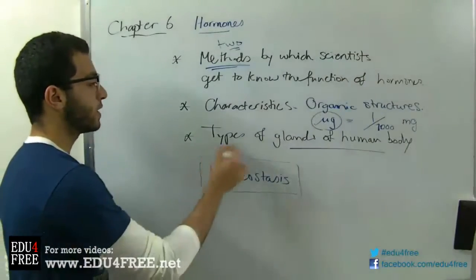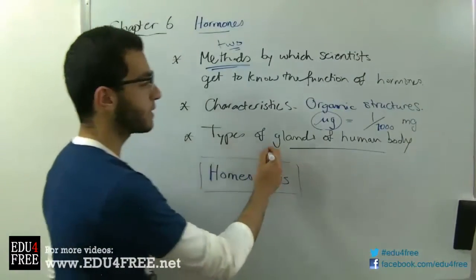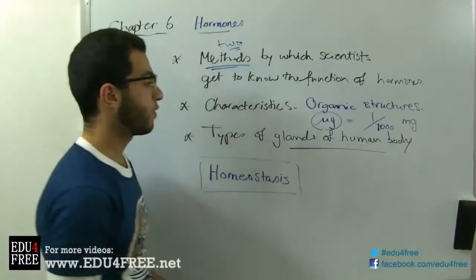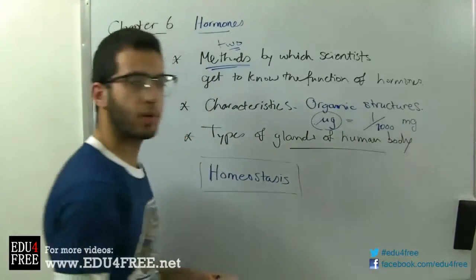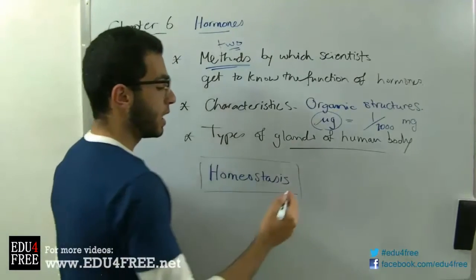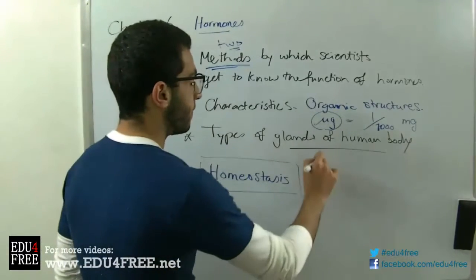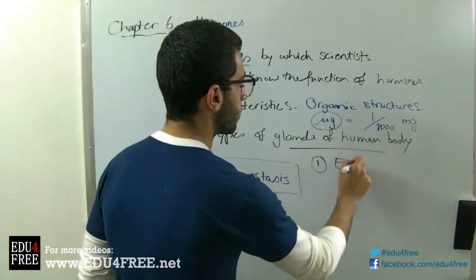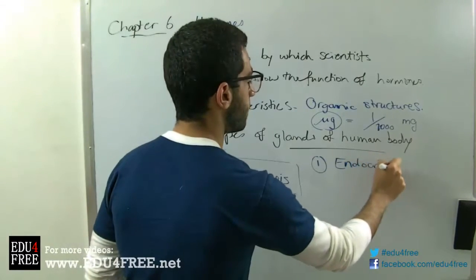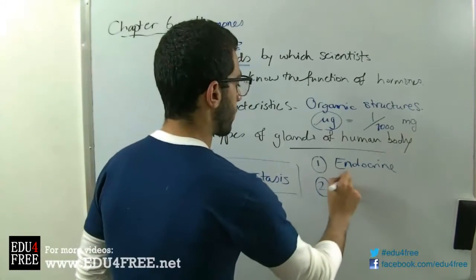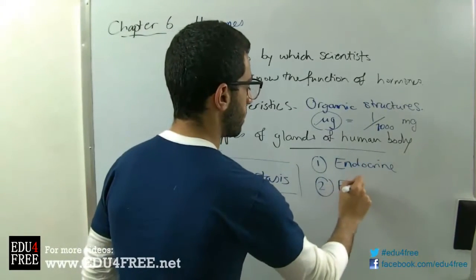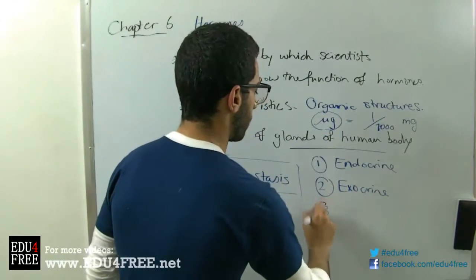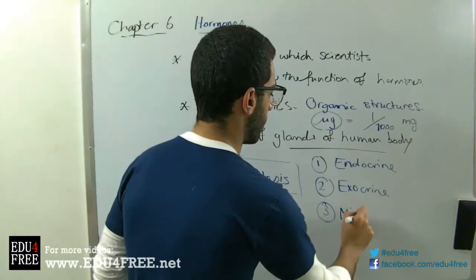Finally, we have the types of glands of the human body. Here we have three types of glands. We mentioned in the previous video at the beginning that there are endocrine glands, exocrine glands, and there are also mixed glands.